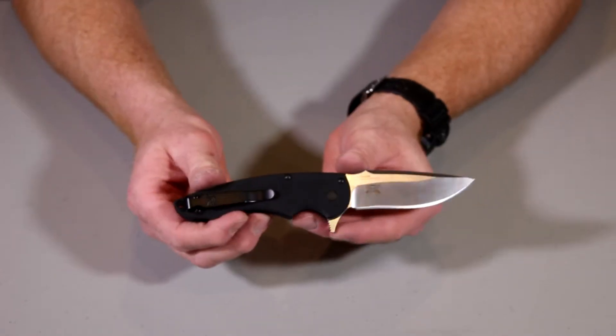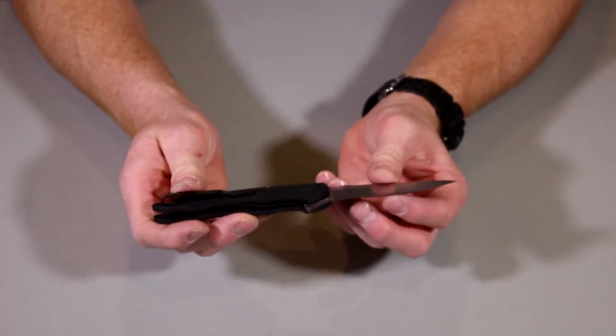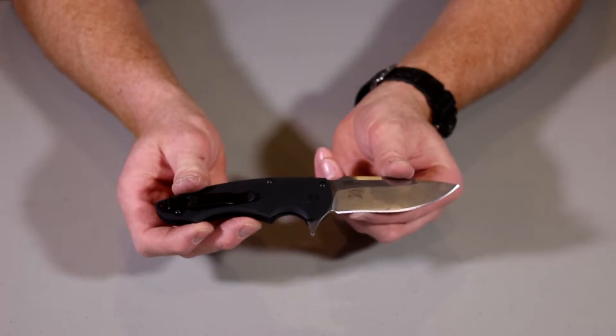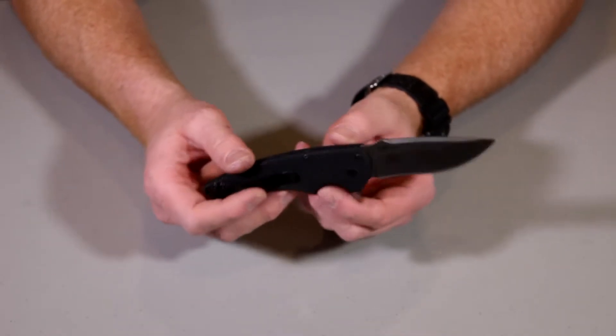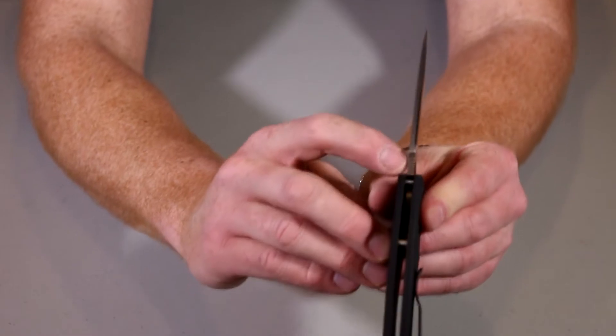Very very nice blade shape. Sort of a drop point. But then a reverse drop point. So it kind of comes back just a wee bit there. So very nice sort of gnarling on the back side there.